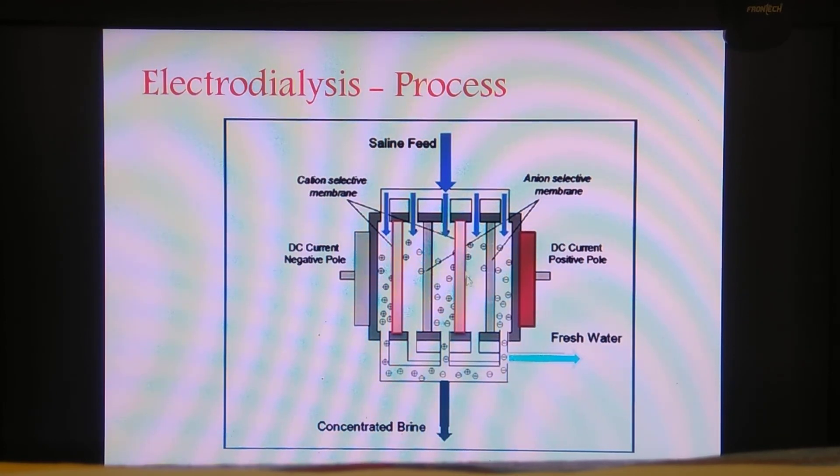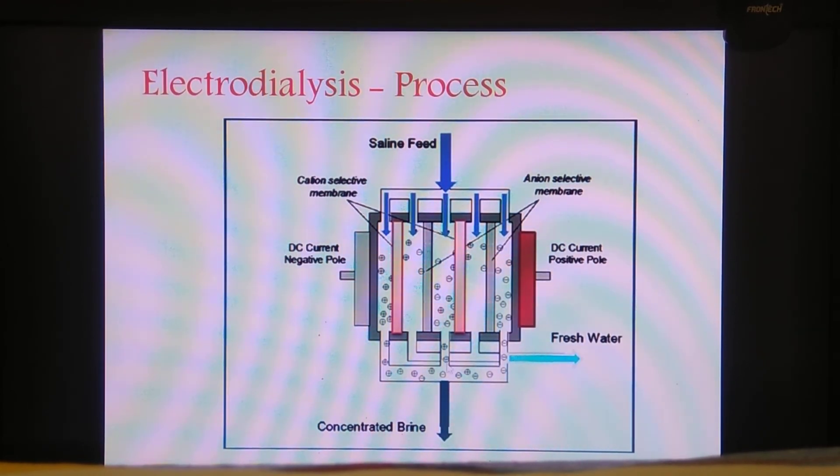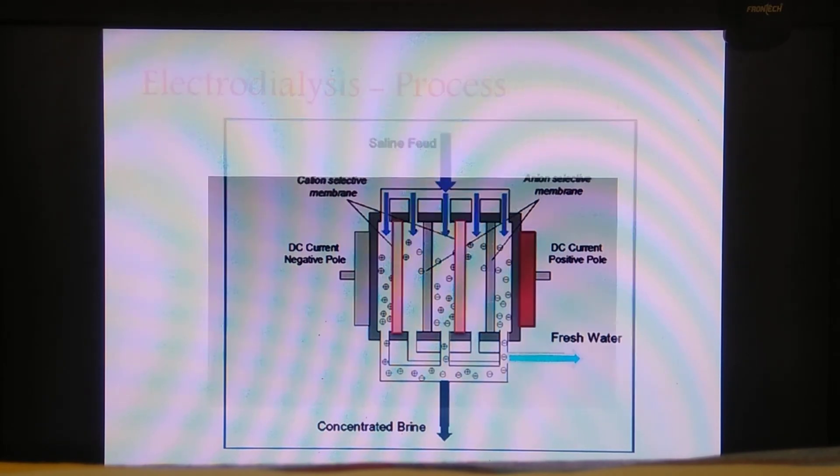When the saline water is fed into it, the cations pass through the cation selective membrane and the anions pass through the anion selective membrane. This area contains both cation and anion because the anions come from the gray region and the cations come from the red region. The water which is left out is free from ions and that is called the fresh water, whereas the concentrated brine, which is saturated solution of sodium chloride, is left out. This is the diagrammatic understanding of electro dialysis.